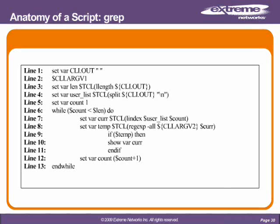Line four, we set var user_list — just creating a variable with an arbitrary name. We also invoke another TCL function: split. Just like we examined in prior slides, we pass split CLI out and tell it to split on every new line. Line five, we set another control variable, count, to one. Line six, we see our while loop in action: while count is less than length, do the following. The len variable from line three is very important — using a TCL function, we have programmatically told the while loop how long to run based on a variable element.